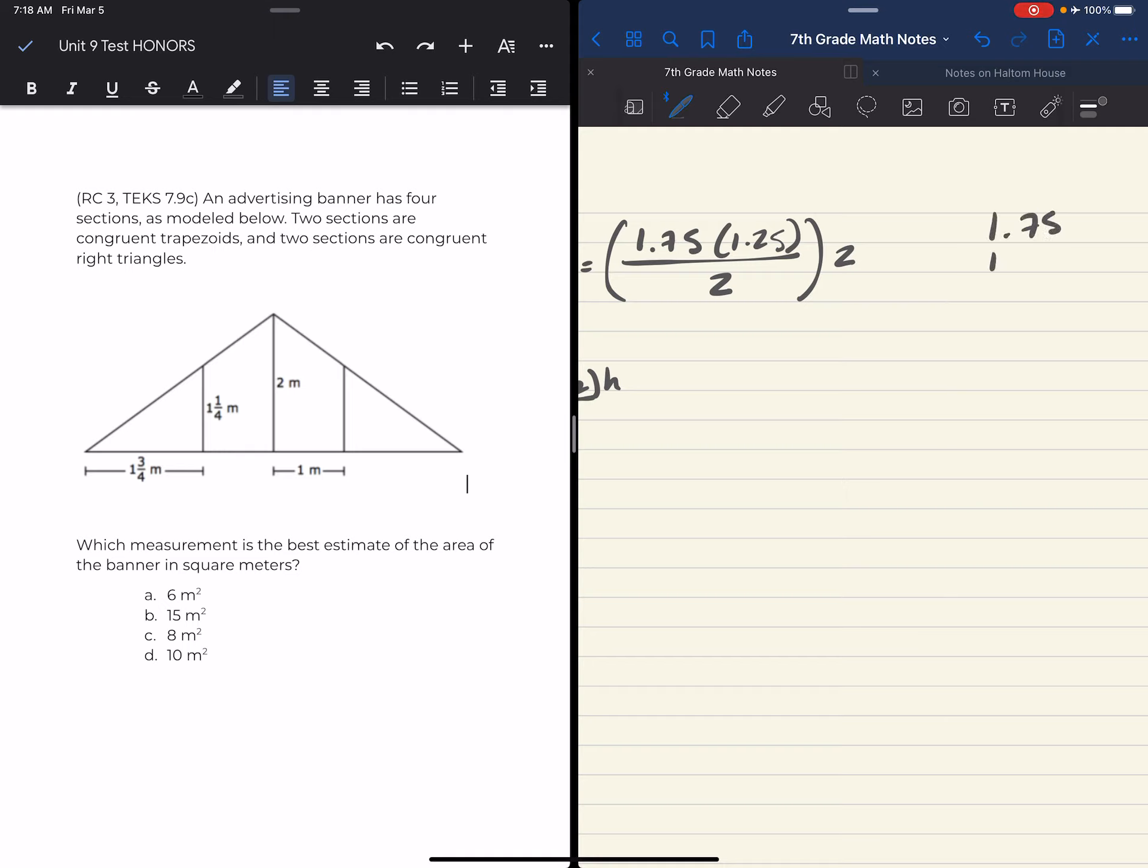So let's go ahead and figure out what one and three-fourths times one and one-fourth is. 1.75 times 1.25. Five times five is 25. Seven times five is 35, plus two is 37. That's eight. Zero placeholder. Five times two is 10. Seven times two is 14, plus one is 15. One times two is two, plus one is three. Two zero placeholders.